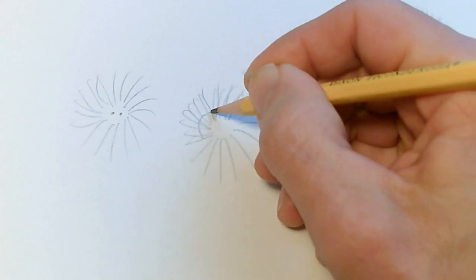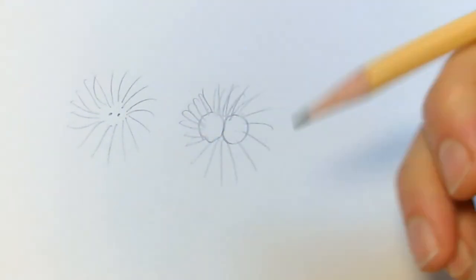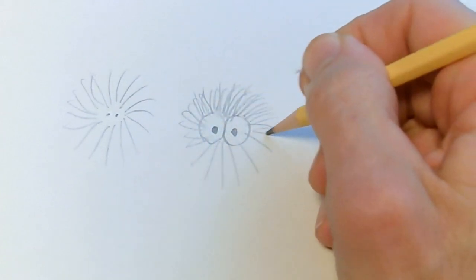And then instead of spots, we'll put two circles for the eyes. Now we'll have to erase a little bit of the fur, and then the eye spots can go in there like pupils. That gives the monster a really nice intense stare, which is great in monsters.